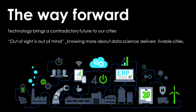The way forward. Technology brings a contradictory future to our cities. Tech optimists see technologies like autonomous vehicles, mobile health care and robot teachers making our cities better, more inclusive and sustainable places. On the other hand, technopessimists see a dystopian future where AI and robots take away jobs and we live in a state of perpetual surveillance. Knowing more about data science delivers healthier, happier and more reliable cities. Thank you.